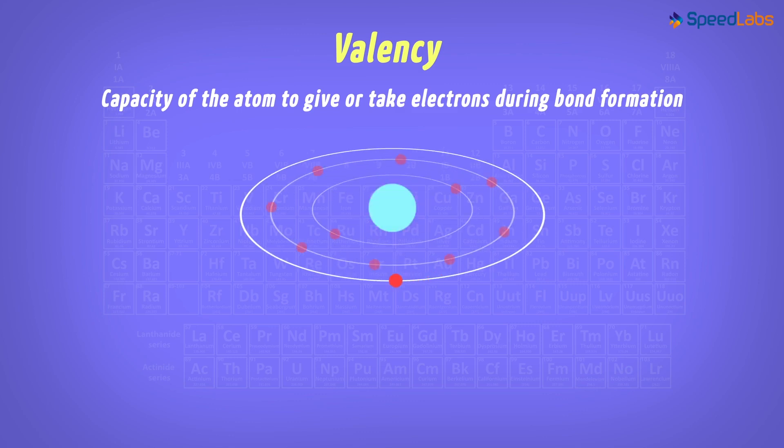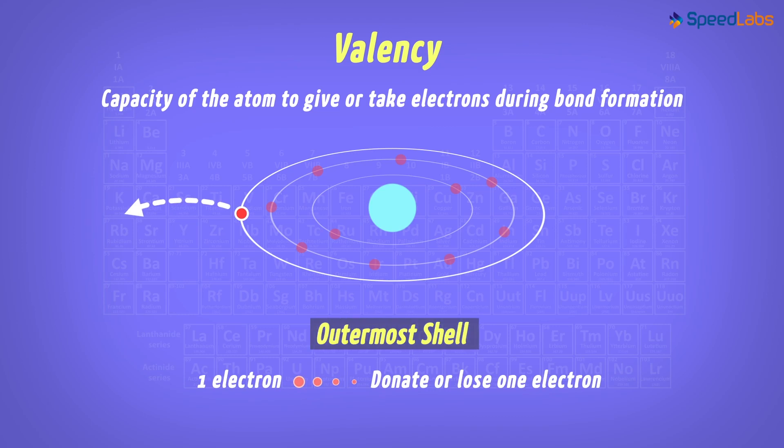Say this atom has just one electron in its outermost shell. What do you think will its tendency be? Yes, it would want to donate or lose that electron in the outermost shell.